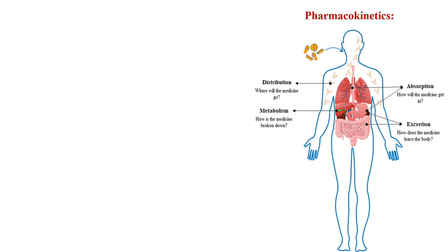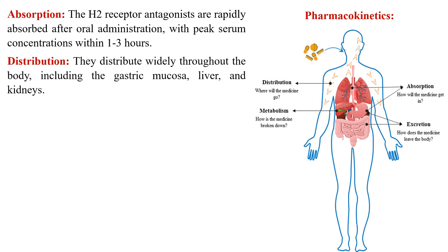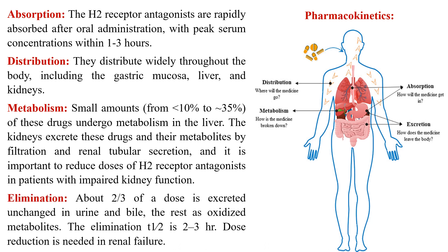Now let's study pharmacokinetics. Absorption of H2 receptor antagonists is rapid — they are rapidly absorbed from oral administration with peak serum concentration within 1 to 3 hours. They distribute widely throughout the body, including the gastric mucosa, liver, and kidneys. About 35% of these drugs undergo metabolism in the liver. The kidneys excrete these drugs and their metabolites by filtration and renal tubular secretion, so it is important to reduce the dose in patients with impaired kidney function. About two-thirds of the dose is excreted unchanged in urine and bile; the rest are oxidized metabolites. Elimination half-life is 2 to 3 hours.